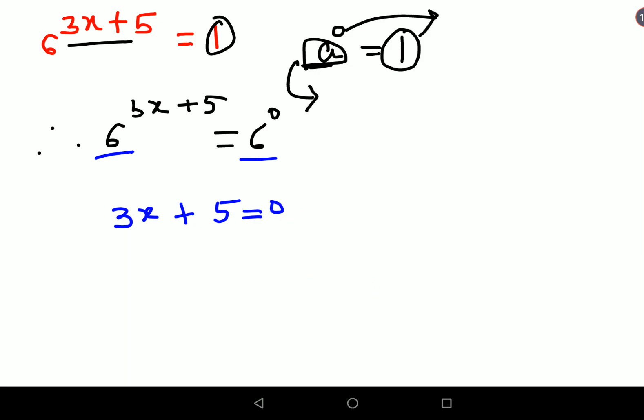So in order to find the value of x, what we will do is subtract both sides by 5. So we get 3x, 5 minus 5 gets you 0, so 0 minus 5 gets you minus 5.